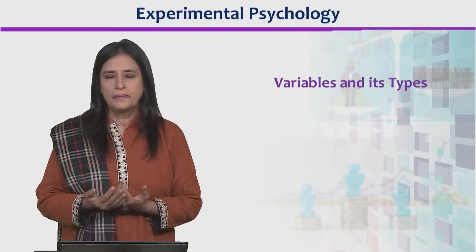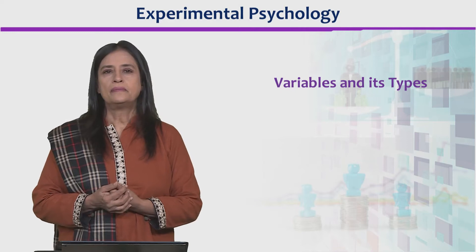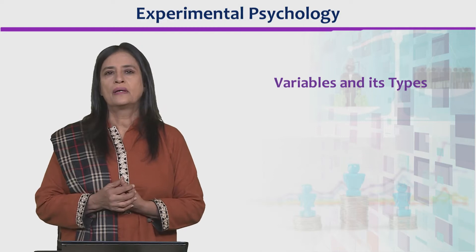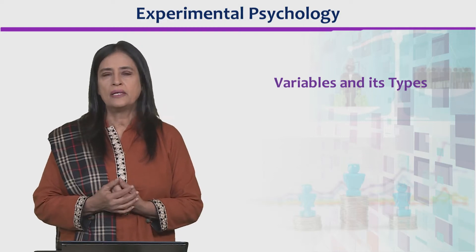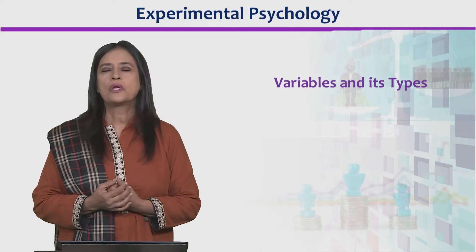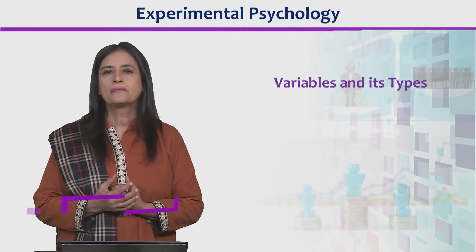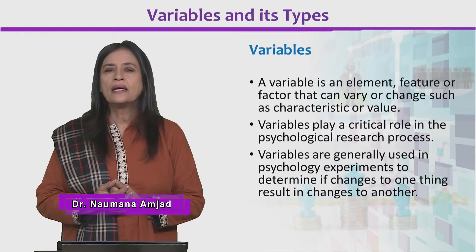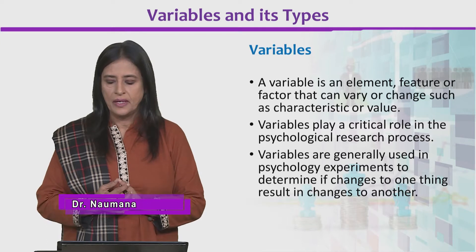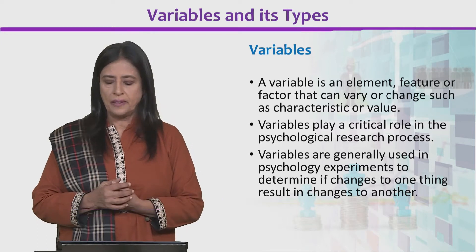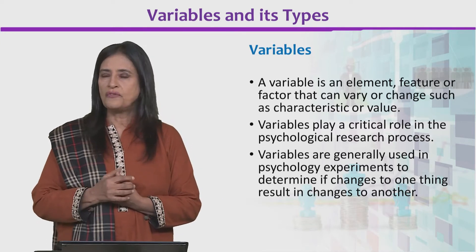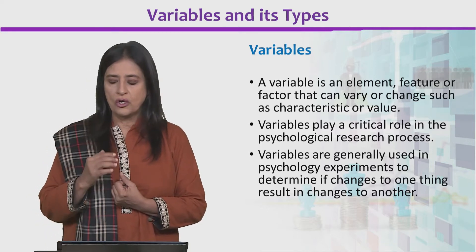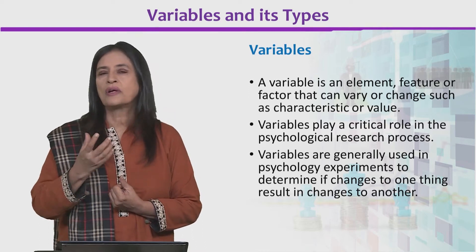To conduct the experiment, we have said that there are variables. Now, what are variables and what are the types of variables that we study? Variable is an element, feature or factor that can change. The standard definition of variable is that it is an element, feature or factor that can vary or change, such as a characteristic or a value.